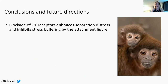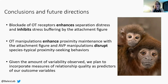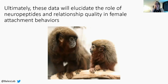These findings demonstrate that oxytocin and vasopressin play important but possibly different roles in attachment behaviors. Blockade of oxytocin receptors enhances distress upon separation and impairs stress buffering by the attachment figure. Oxytocin manipulations also enhance proximity maintenance with the attachment figure, while vasopressin manipulations disrupt it. Given the amount of individual variability in response to these testing paradigms, we plan to add an additional predictor to all of our models: quality of relationship with the father. We have several measures of relationship quality collected on all titi monkeys starting at birth, measuring separation distress and proximity maintenance. Ultimately, we hope that these data highlight the role that neuropeptides and relationship quality play in female attachment.